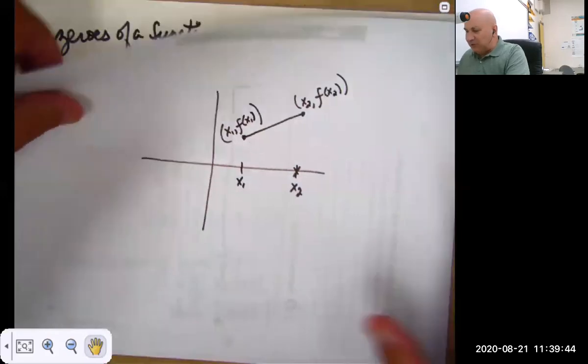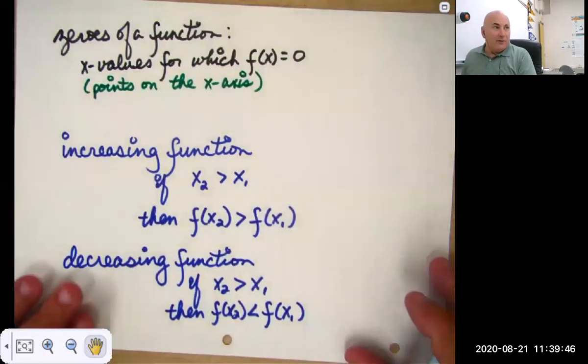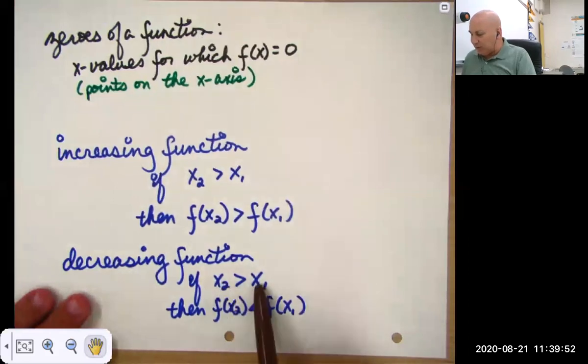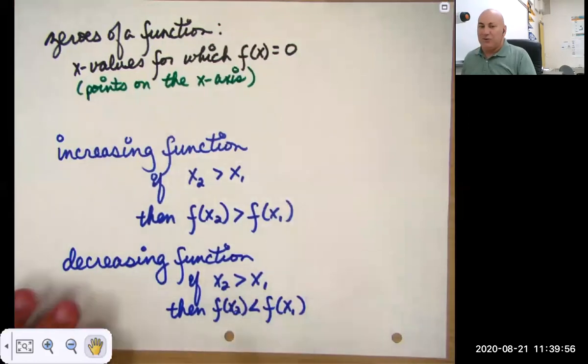And you should be able to generate the graph for a decreasing function if x2 is greater than x1. So again, x2 is on the right. The y value is below the y value for x1.